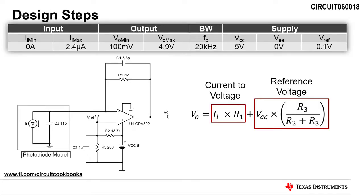This circuit inputs a current from 0 to 2.4 microamps and outputs a voltage from 100 millivolts to 4.9 volts. It utilizes a single 5-volt supply, reference voltage of 100 millivolts, and has a bandwidth of 20 kilohertz.